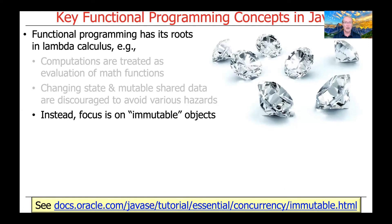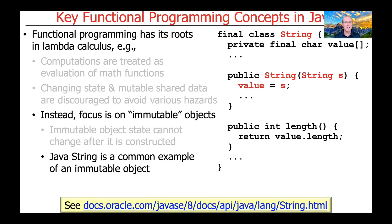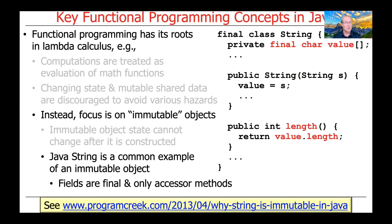So what does functional programming focus on affirmatively, if it avoids mutable state, sharing, and side effects? Its focus is on so-called immutable objects — objects whose state cannot be changed after construction. This may sound mysterious, but it's actually very simple. The String class in Java is a common example: it has constructors to initialize from another string or a character array, fields like length, but all fields are final and it only has accessor methods — no mutator methods. Once a String is created, its value cannot be changed; operations like substring create a new copy rather than modifying the original.